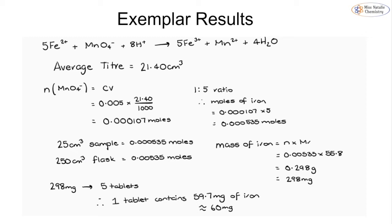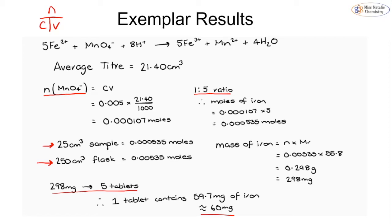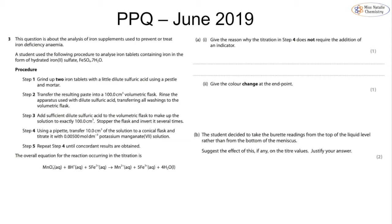Using example results with an average titer of 21.4 cm³, we work out the number of moles of manganate using n = c × v. Since one mole of manganate is equivalent to five moles of iron, we multiply by five. That gives moles in a 25 cm³ sample, so we scale up to the 250 cm³ flask. We can then work out the mass of iron — 298 milligrams in five tablets — so one tablet contains approximately 60 milligrams of iron.